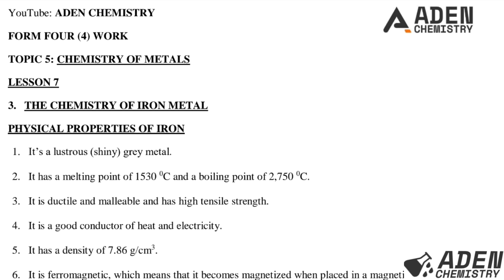Hello students, welcome. Previously in lesson 6, from lesson 4 to big 5, we were dealing with the first part of the chemistry of iron metal — the occurrence and extraction of iron. Today in lesson 7, we'll proceed to the second part: the physical and chemical properties of iron, the types of iron and their uses, alloys of iron and their uses, and lastly two extended questions.